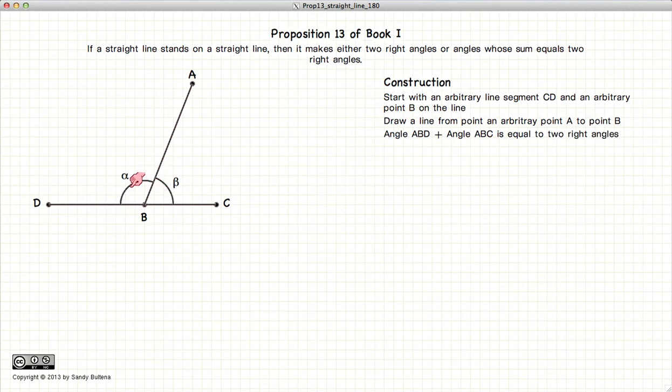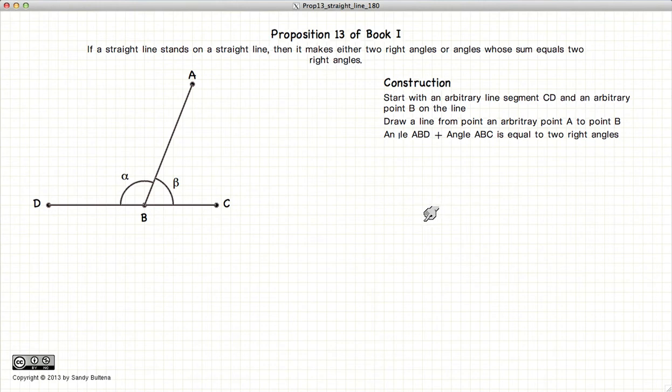So according to this proposition, alpha plus beta is equal to 180 degrees. So how do we go about proving that?